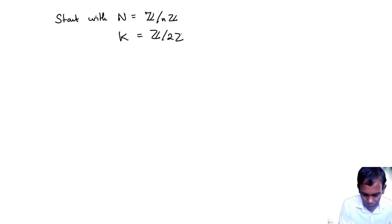Let's look at the dihedral group example. We can turn it backwards and we can say start with N equals Z mod nZ, K equals Z mod 2Z, which I will write as identity, I'll write it as 1 comma S. So this 1 is the identity of Z mod 2Z. Usually we write it as 0 in additive notation. Let's call it identity comma S. Okay, and this S is the non-trivial element of Z mod 2Z.